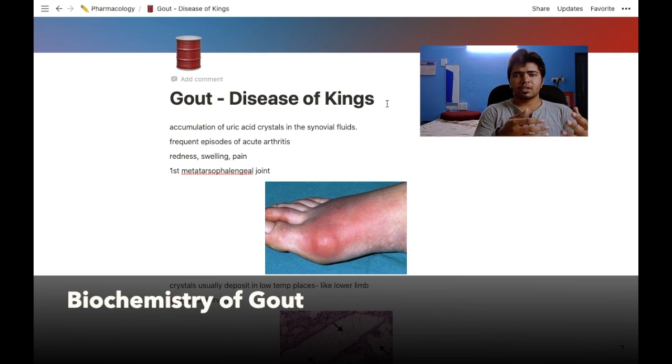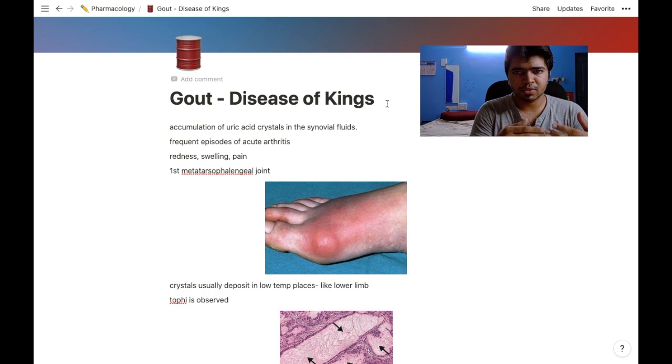Purine during metabolism forms hypoxanthine, then xanthine, and then uric acid. These uric acids present in our serum get crystallized under low temperatures.